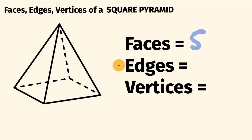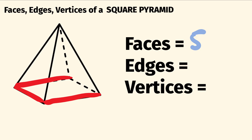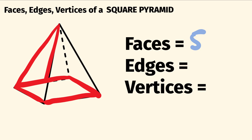Next, we're going to have a look at the number of edges. These are where the shape's faces meet. So let's see how many there are. We count these: we have one, two, three, four edges along the bottom there. And then going up to this apex here, we have one, two, three, four edges there. So all together, the number of edges in a square pyramid, there are eight.